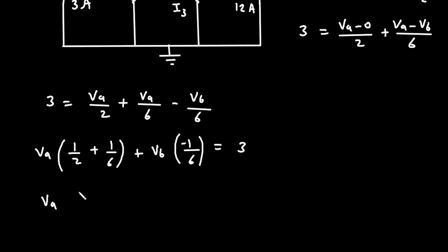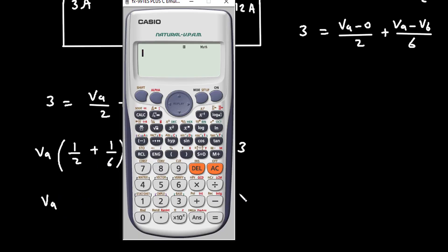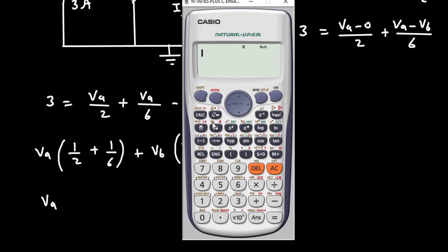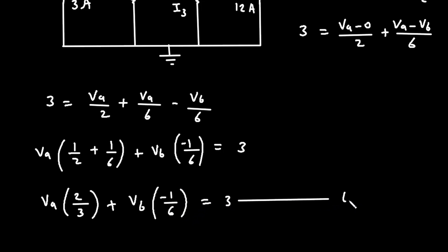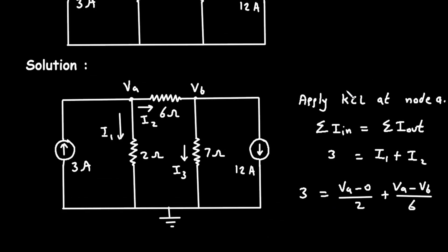So VA times — and 1 by 2 plus 1 by 6 equals 2 by 3 — so 2 by 3, plus VB in bracket minus 1 by 6, is equal to 3. Let's call this equation number 1.